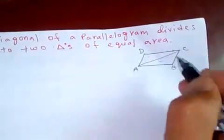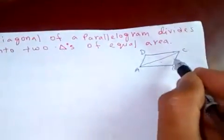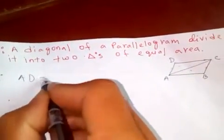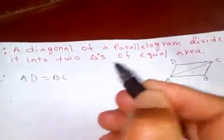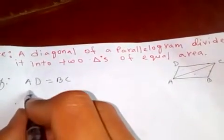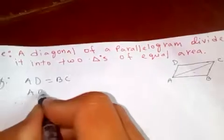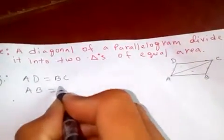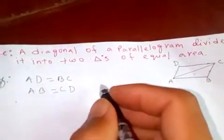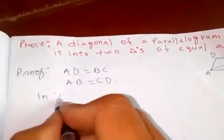that opposite sides are equal. So these two must be equal: AD equals BC, and AB equals CD. In these two triangles,